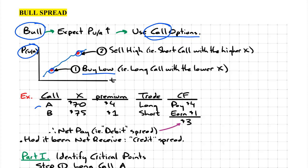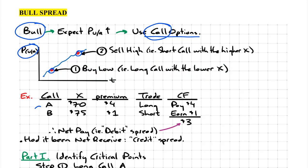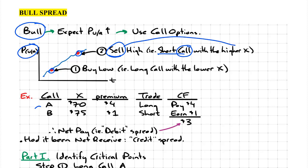To buy low, he would have to buy the call option that has a lower strike price, so that if he does exercise his call option, he would pay that lower strike and therefore buy the underlying asset. To sell high, what the investor will do is short a call option. This way, if that call option does get exercised, the investor will have to deliver that underlying asset at that higher strike price. So his objectives will have been met.